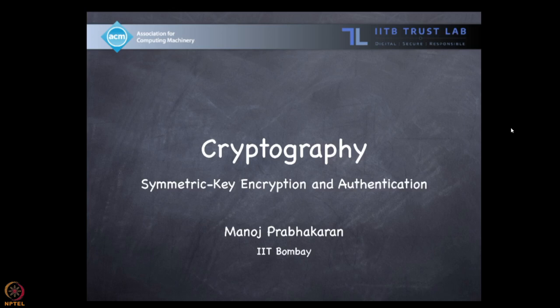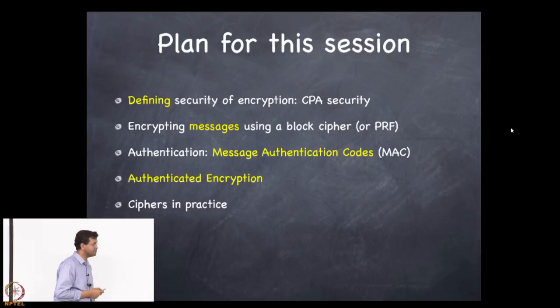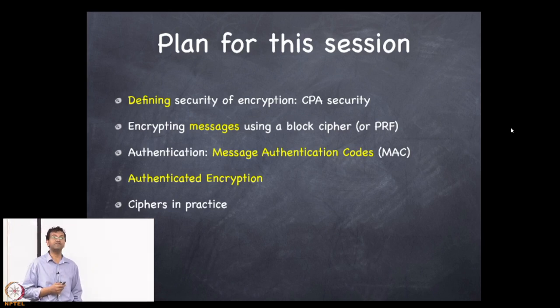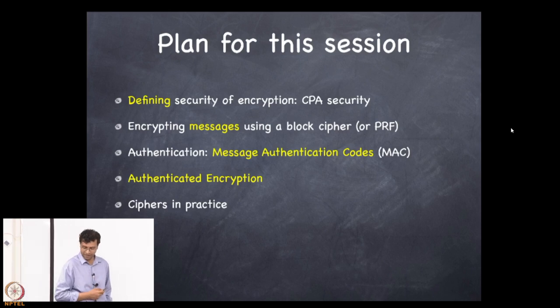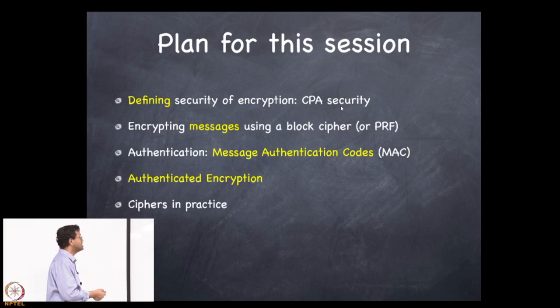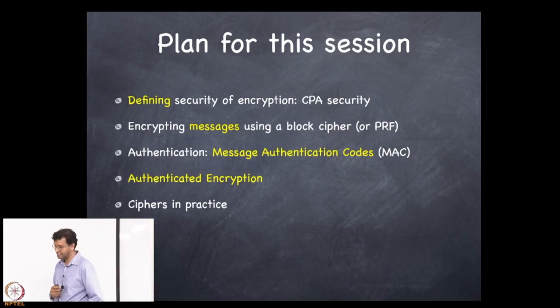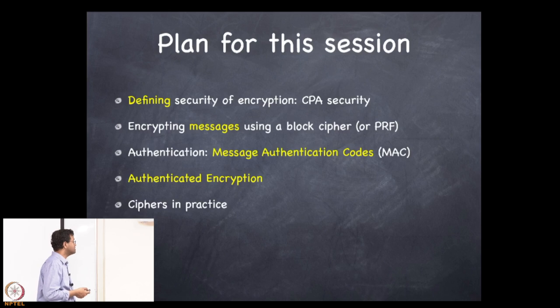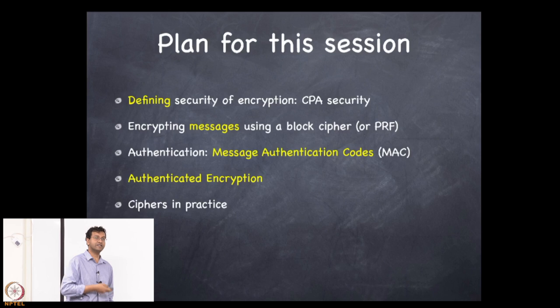Okay, let's get started. I kind of left you hanging at the end of the previous lecture, but we'll cover that now. The plan for this lecture: I'll start with defining security of encryption — specifically CPA security, chosen plaintext security, for symmetric key encryption. Then I'll get to how to do encryption using a block cipher. Maybe we'll talk about authentication in the second half of this lecture, and end with some discussion about ciphers in practice.